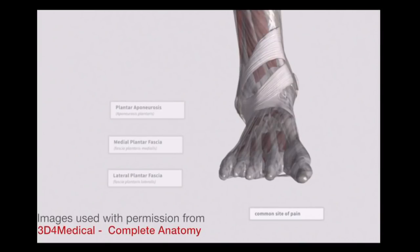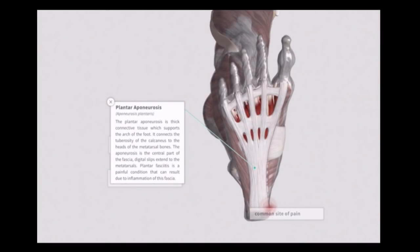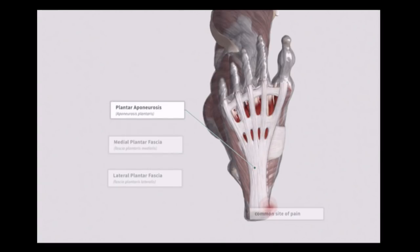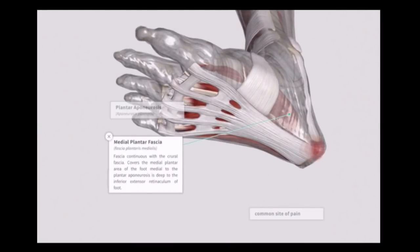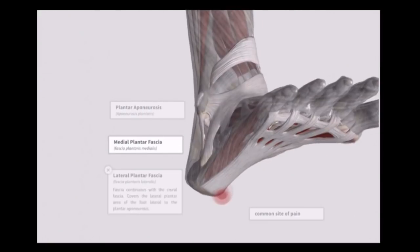Let's take a look at some of the structures involved. What's usually referred to as the plantar fascia is actually the plantar aponeurosis, which is a thickened band of connective tissue that supports the arch of the foot. Functionally it's like a ligament because it's connecting bone to bone. The aponeurosis is the central part of the fascia, and then it has slips that extend onto the metatarsals.